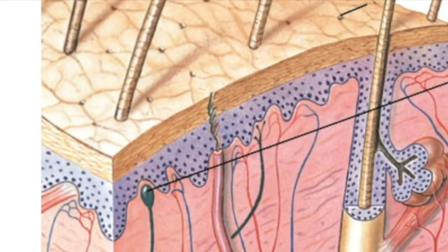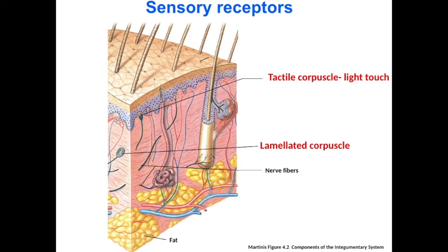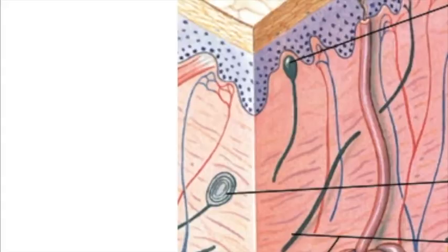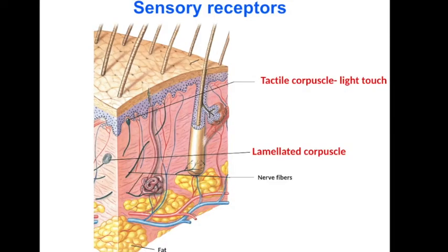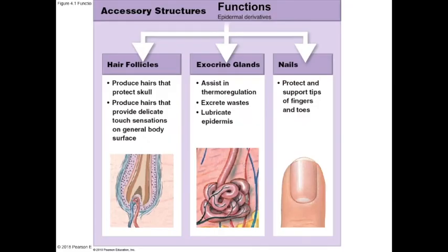Two key receptors are worth noting here. Tactile corpuscles, also known as Meissner's corpuscles, are embedded close to the surface within the dermal papillae and detect faint pressures on the skin. Lamellated corpuscles, or Pacinian corpuscles, are located deeper and require deeper, more sustained pressure to be stimulated. There are hundreds of both receptor types across the skin, and the higher the density of receptors in a given area, the more sensitive that area is to particular types of touch.